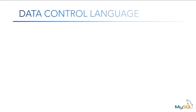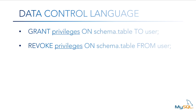Data Control Language, or DCL as it's abbreviated, is used to control access to data in a database. It consists of the grant and revoke commands, which are used to give or remove access to users to database objects such as tables, views, stored procedures, and so on.